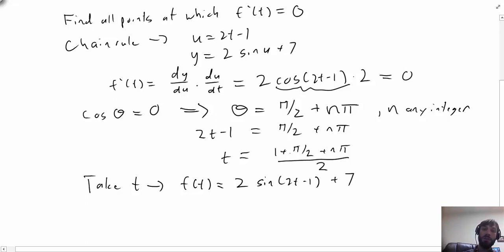There's no reason to really simplify t because we can see once we plug it back in, the 2s cancel, the 1s cancel, and we end up getting 2 times sin(π/2 + nπ) + 7.